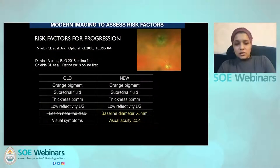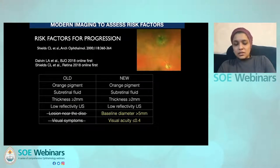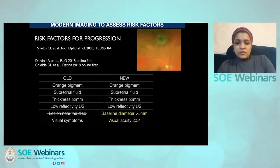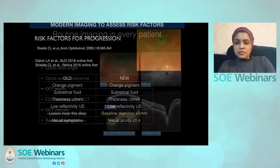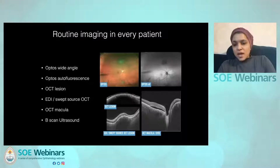The Shields group over 20 years ago described a number of risk factors to try to give clinical clues to differentiate malignant from benign disease: orange pigment, subretinal fluid, large tumours, and low reflectivity on ultrasound. Lesions near the disc have now been removed in the updated 2018 guidelines, and visual symptoms has been replaced by something more specific — vision dropped as a direct result of the tumour. Every patient in our oncology centre is assessed across all these imaging modalities to identify each risk factor.